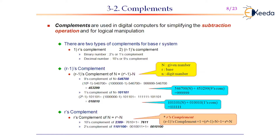There are two kinds of complements: r's complement and r-1's complement. When it comes to binary, it is 2's or 1's complement, and when it comes to decimal, it is 10's or 9's complement. The r-1's complement can be obtained using the formula r^n - 1 - N, where r is the radix, n is the total number of digits, and N is the actual given number, yielding its r-1's complement.